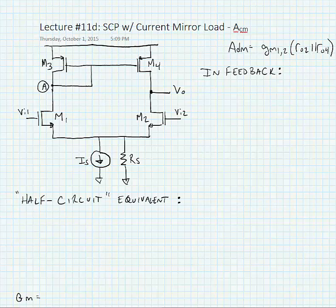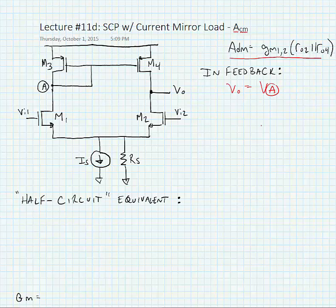Remember in the last set of slides we found that the differential mode gain was simply GM12 times RO2 in parallel with RO4. We're noting GM12 simply because little GM1 or little GM2, since those two transistors are equal. So what we first need to know is that in feedback, VO, the output voltage, is going to track the node that I've labeled VA.